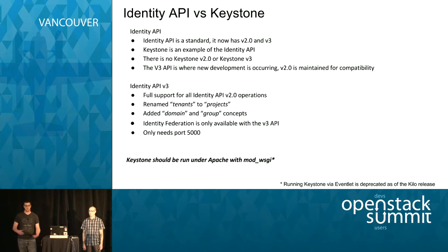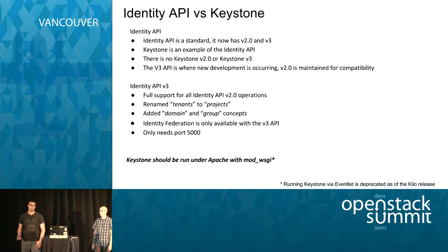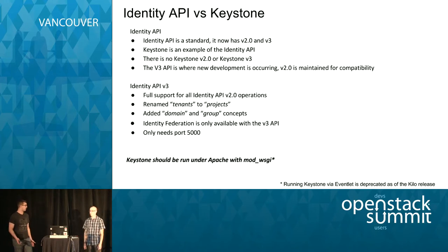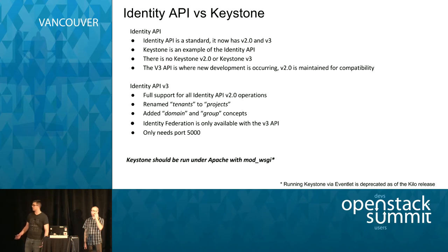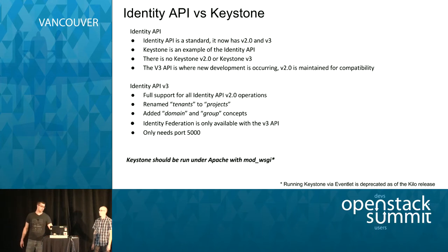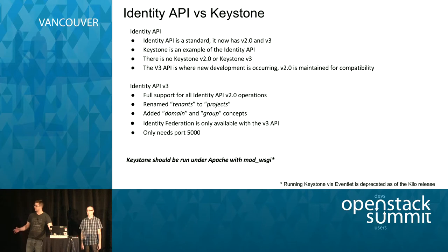A quick note about the identity API versus Keystone — they're not the same thing. There's the identity API version 2, which most people are familiar with, and version 3, which is being actively worked on. Keystone supports both at the same time; they're just different API specs. The big differences in version 3 are concepts of groups, domains, and federation capabilities. As a result, we encourage everyone to run Keystone under Apache instead of eventlet. A lot of what we're going to talk about requires Apache — it's not a should, it's a must. Pretty much everything we'll cover is V3 related.